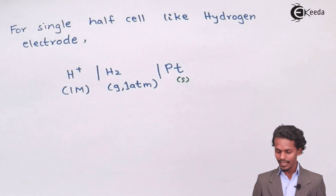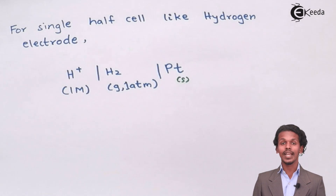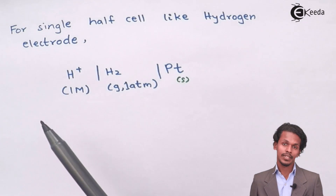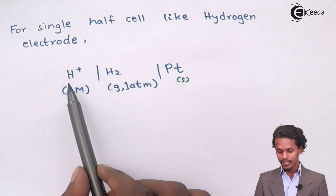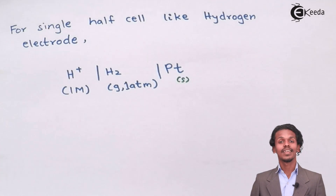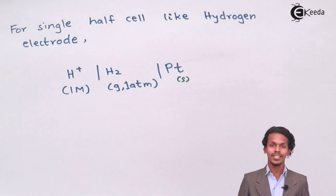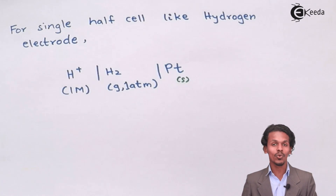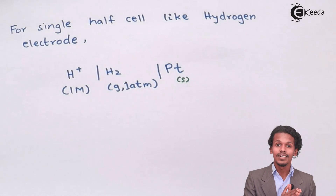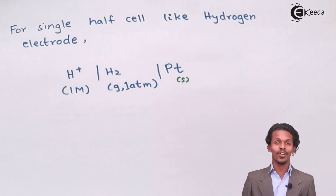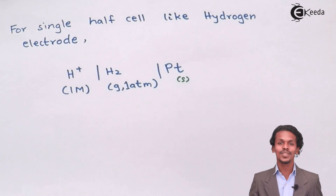Since H₂ is gaseous but we need a solid electrode, platinum is used as the inert electrode. Platinum is in solid form, so the phase difference between H₂ and platinum is again represented by a vertical line. When representing this half cell, the aqueous solution is mentioned first, followed by the electrode — so H⁺ (aq) is mentioned first, then H₂ at its pressure, then platinum. This is how a half cell is represented.